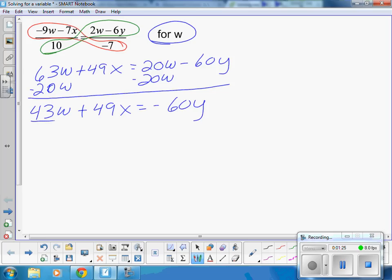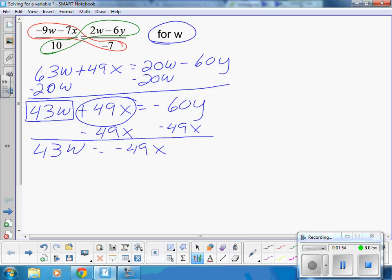Again, I want to isolate my W. Just like if I was solving an equation, I have to get rid of my plus 49X. So I'm going to subtract my 49X from both sides. I'm left with 43W equals negative 49X minus 60Y. I cannot add or subtract those because they have different variables.